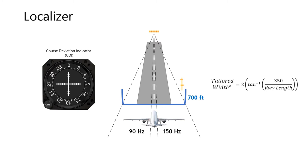For example, using the inverse tangent function, we can estimate the half-width angle of a 10,000-foot runway by dividing 350 feet over 10,000 feet, which equals 2 degrees. Multiply that by 2, and we know a 10,000-foot runway should have a 4-degree total airborne width.